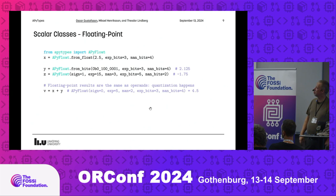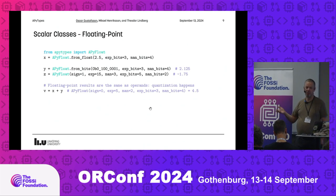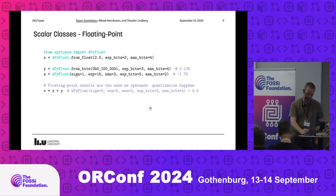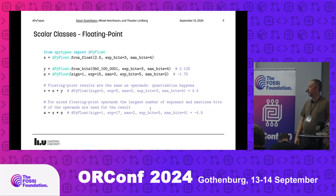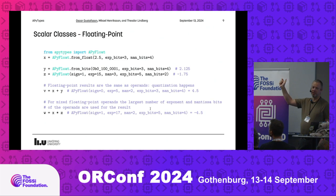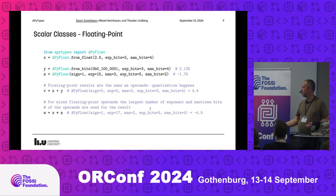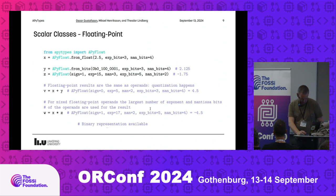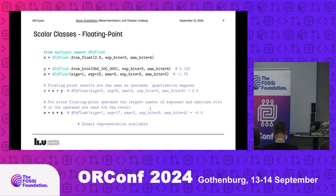For mixed formats we take the largest exponent bits and the largest mantissa bits. We can also specify the bias if we want to change the range, with an equation to determine the mixed-bias result. We can also get the binary representation of floating-point numbers to inspect the bit pattern.